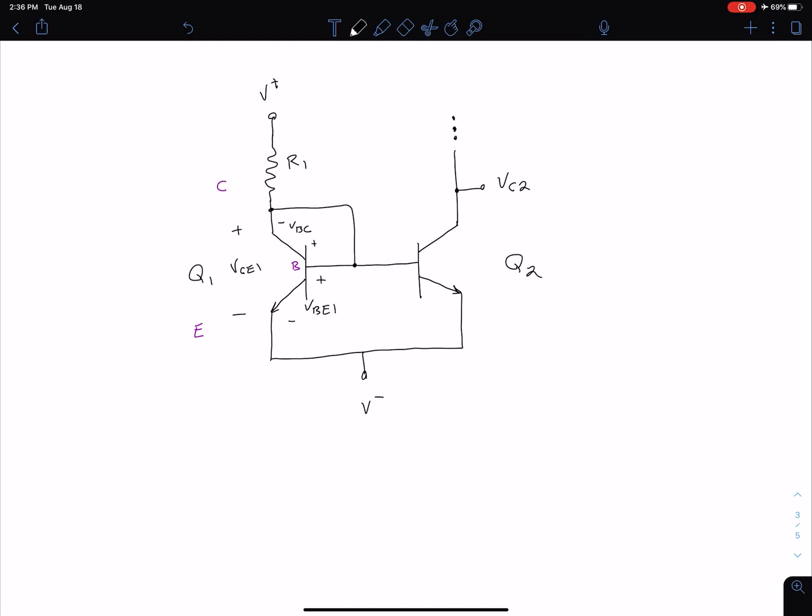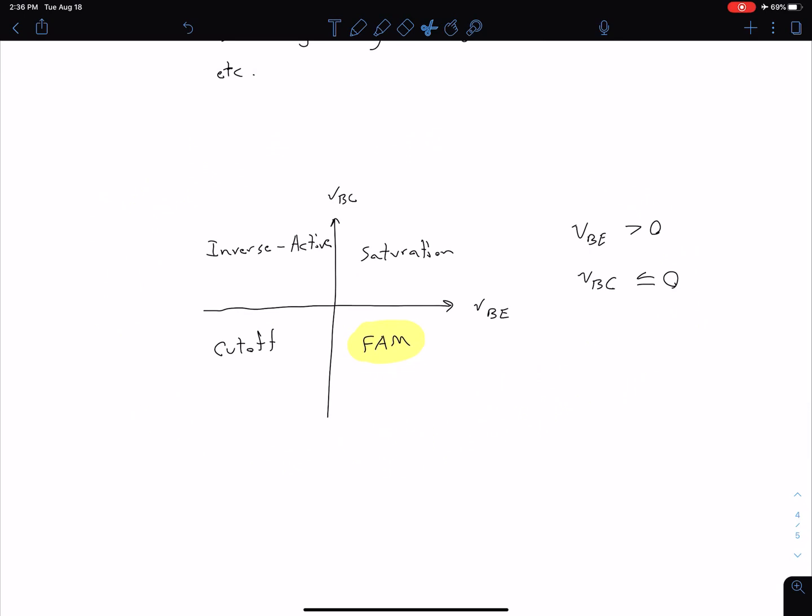Why is that relevant? Like we talked about in our previous video, the biasing of these two junctions—our base-collector and our base-emitter—are going to determine what operating mode we're in. If we want to be in our forward active mode, our VBE should be greater than zero, and our VBC should be less than or equal to zero. Most of the time, we're dealing with this case where VBC equals zero. That's acceptable because our transistor isn't going to switch modes right at that line; it's usually somewhat of a gray area.